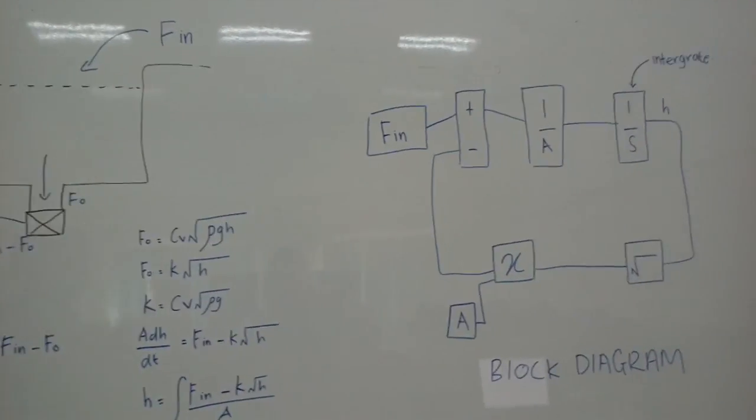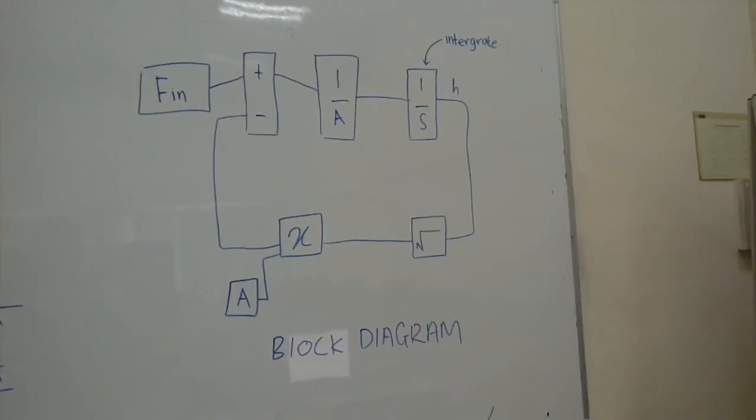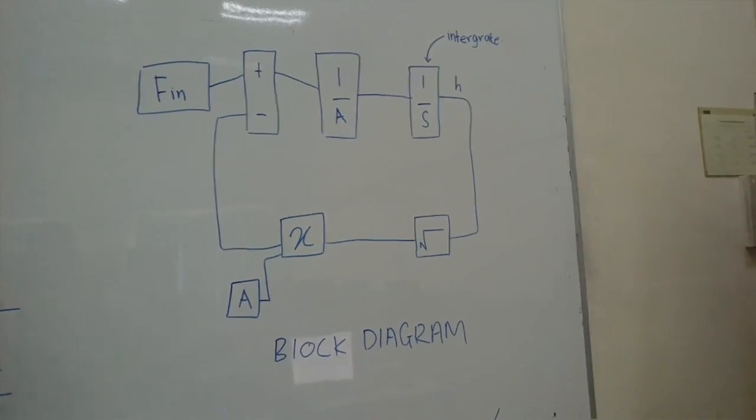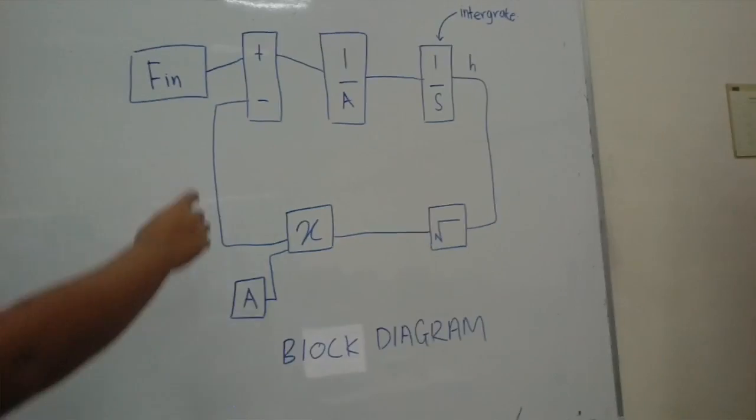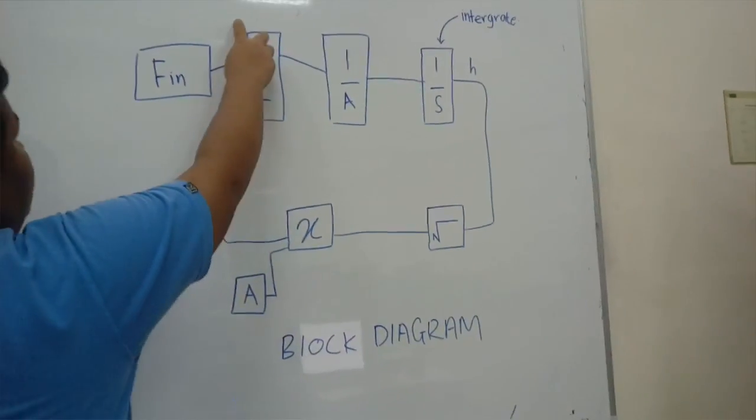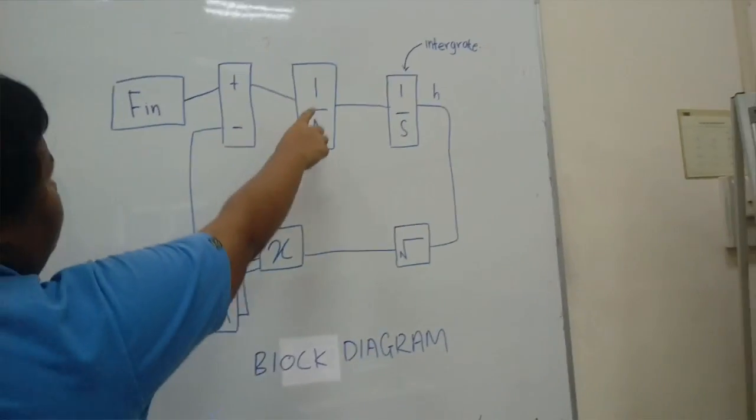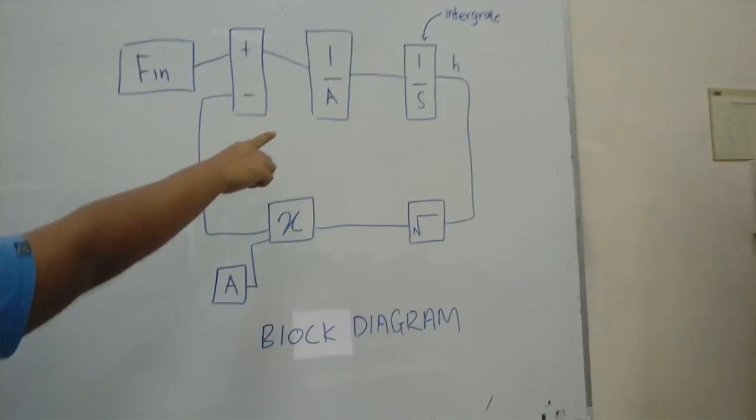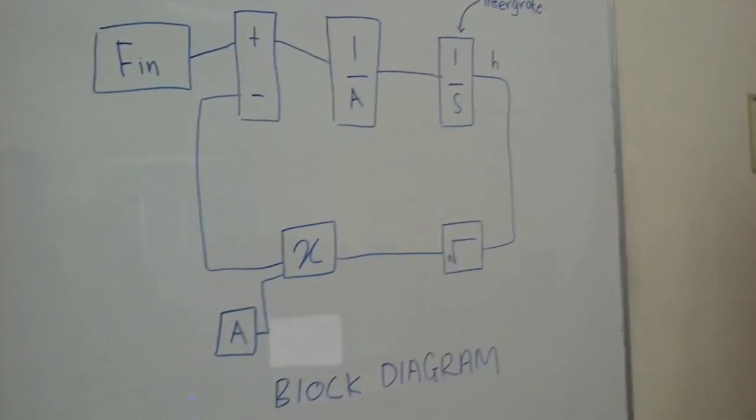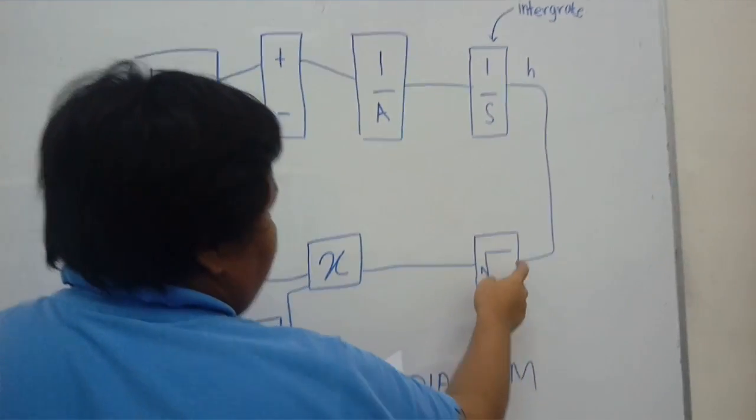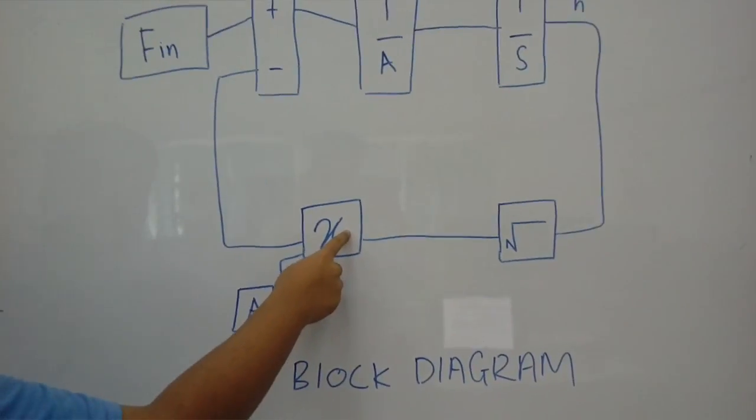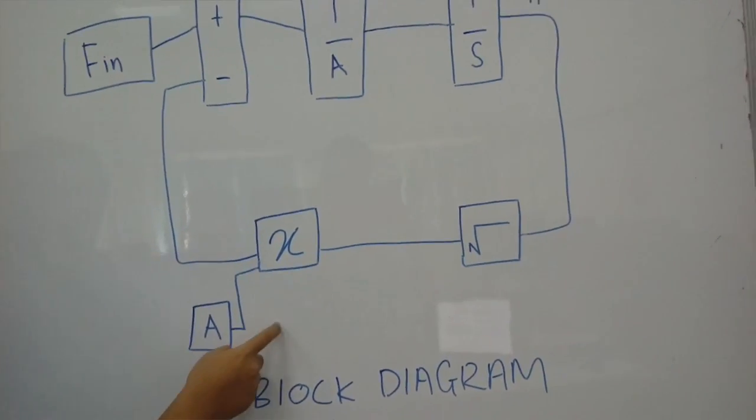This is the block diagram for water level modeling. This is Fin, the input. This is VDC. This is g. This is 1 per A, 1 per area. And this is integrate. This is square root. This is time. This is the value of area.